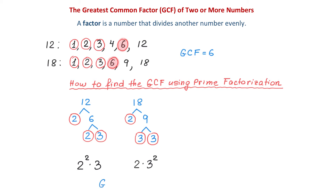Now, let's form the greatest common factor. We will write a product of the factors that appear in both factorizations. These factors are 2 and 3. Now let's talk about the exponents — we need to bring down each factor with the smallest exponent. For 2, the exponents are 2 and 1, so we bring down exponent 1. For 3, the exponents are 1 and 2, so we bring down exponent 1. If we multiply 2 and 3, we get 6, and this is the greatest common factor.